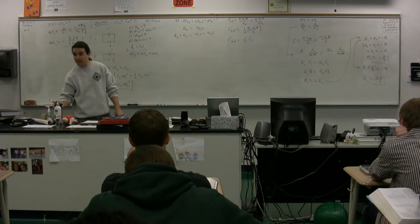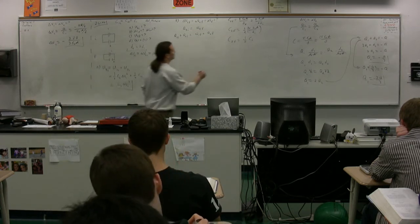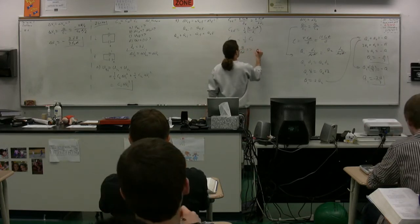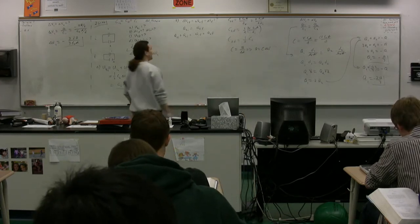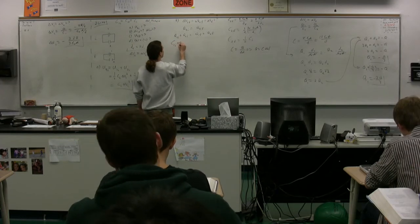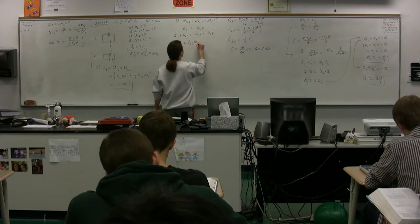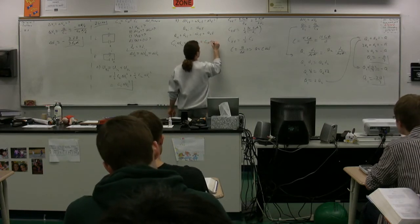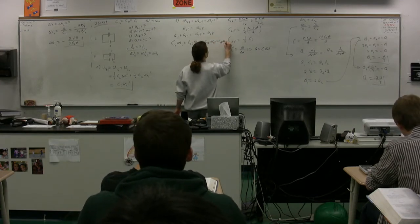Using Q equals C times ΔV, we can substitute into the charge conservation equation. On the left we have C1_initial times ΔV1_initial plus C2_initial times ΔV2_initial, equal to C1_final times ΔV1_final plus C2_final times ΔV2_final.